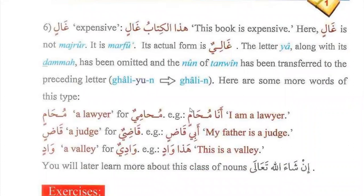Gwalim — 'Gwalim Expansive, Haasal Kitab Gwalim' — this book is expensive. Here Gwalim is not Majroor, it is Marfu. Its actual form is Gwaliyun. The letter Ya along with its Dhamma has been omitted, and the Noon of Tanwin has been transferred to the preceding letter. So Gwaliyun becomes Gali.